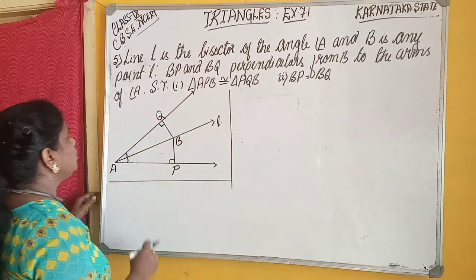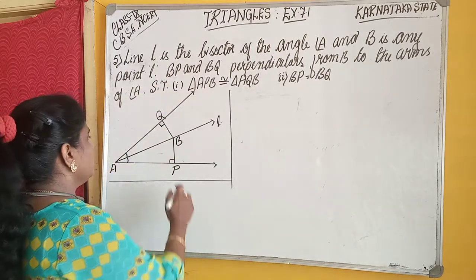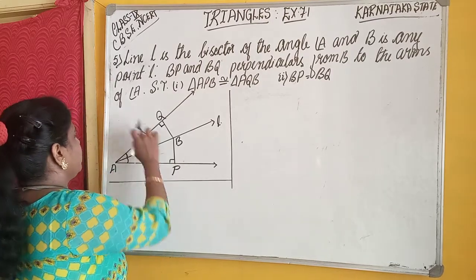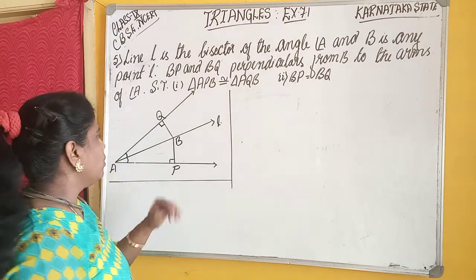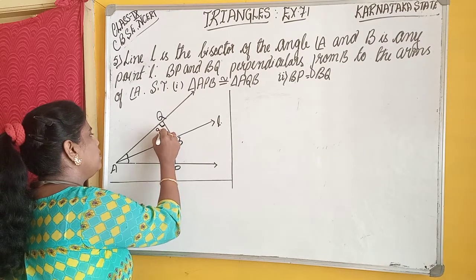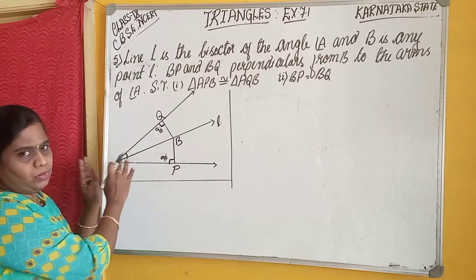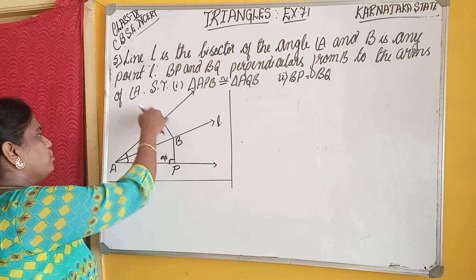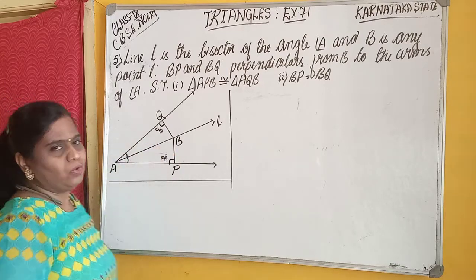B is any point on line L. BP and BQ are perpendiculars from B to the arms of the angle. BP is perpendicular from B to arm AP, and BQ is also perpendicular to arm AQ of the angle. Therefore, these perpendiculars mean these two angles are equal to 90 degrees. Angle BQA equals 90 degrees and angle BPA equals 90 degrees.